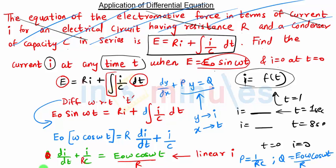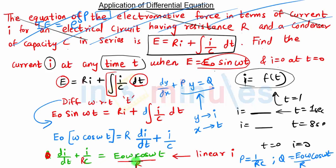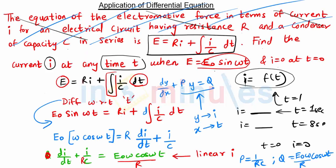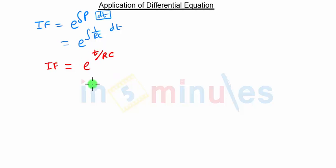This is our linear equation and we have P and Q. The integrating factor is E raised to the integration of P. In the denominator we have dt, so it will be P dt. The integrating factor will be E raised to integration of 1 upon RC into dt. Since 1 upon RC is a constant, it can be taken out of the integration sign, and the integration of dt is just t. So the integrating factor is E raised to t upon RC.